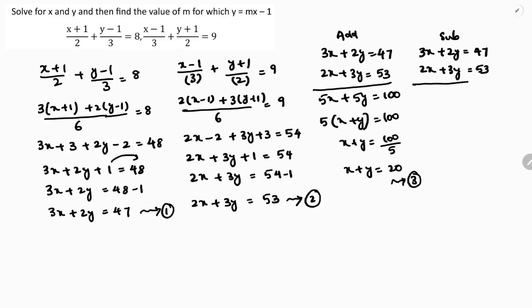Now if I subtract: 3 minus 2 is 1x, 2 minus 3 is minus 1y, and 47 minus 53 is minus 6. So x minus y equals minus 6. This is equation 4.